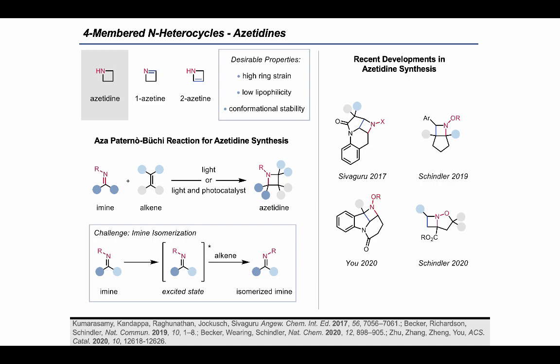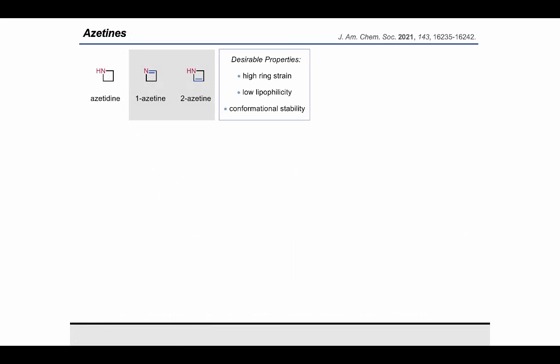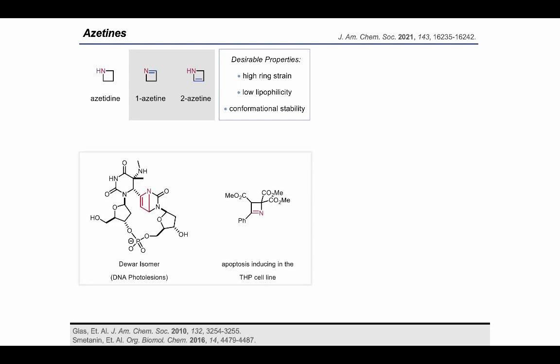While these developments for azetidines are very exciting, despite huge advances in that field, the exploration of azetines—four-membered nitrogen heterocycles with one unit of unsaturation—have been very limited. Azetines have the potential to be very interesting for biological and pharmaceutical applications and are already known as important structures in the degradation of DNA through the formation of photolesions. However, exploration of azetines as pharmaceutically relevant compounds is still limited, partially due to challenges in their synthesis. The ring strain in these compounds makes them more difficult to form.